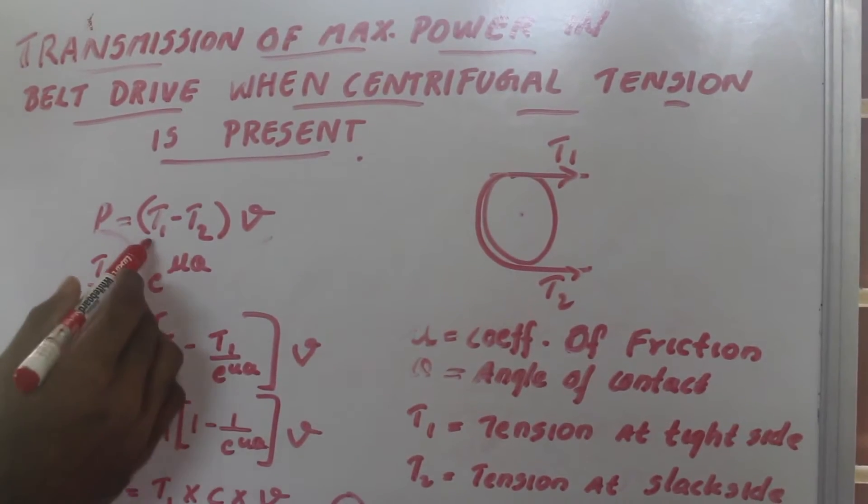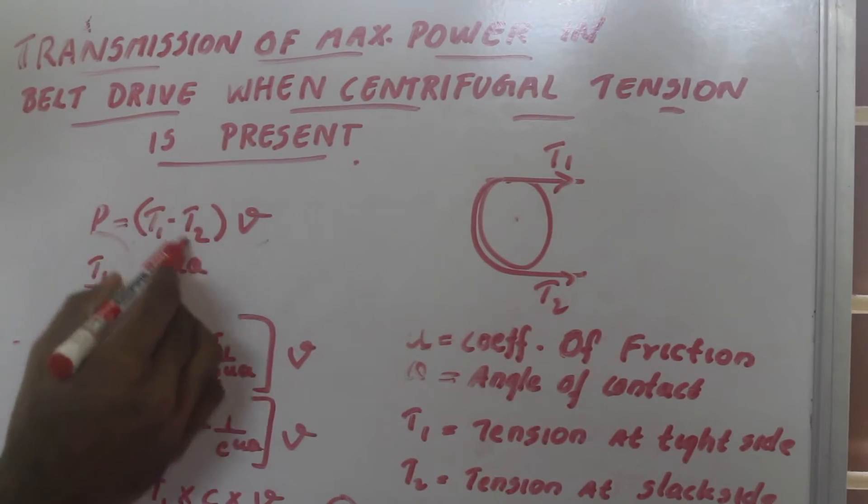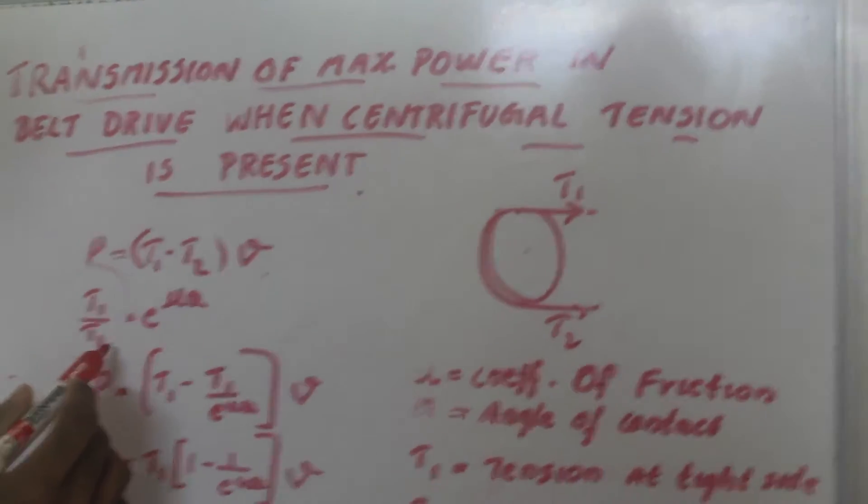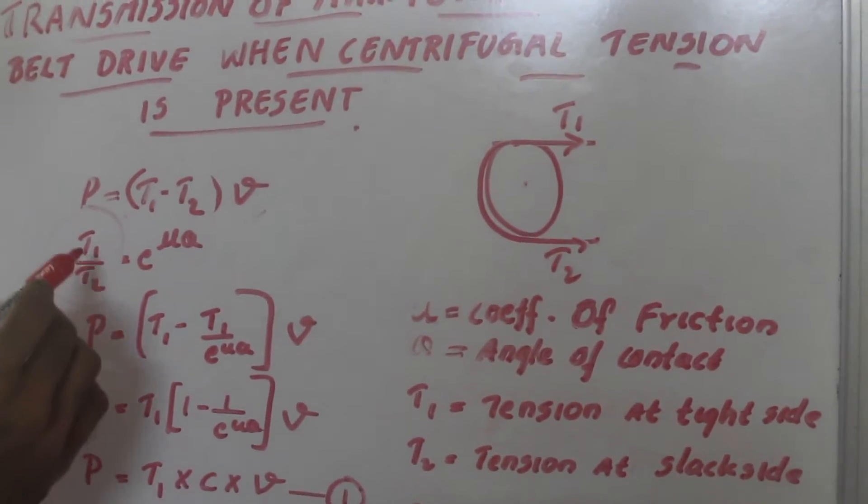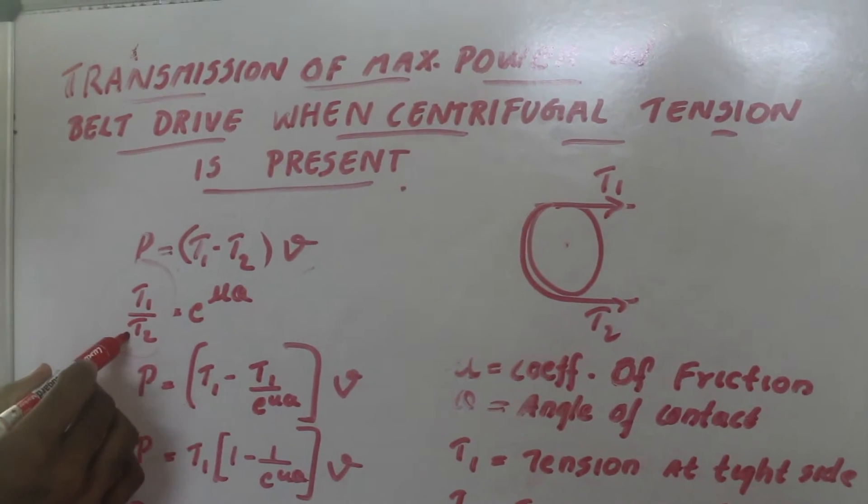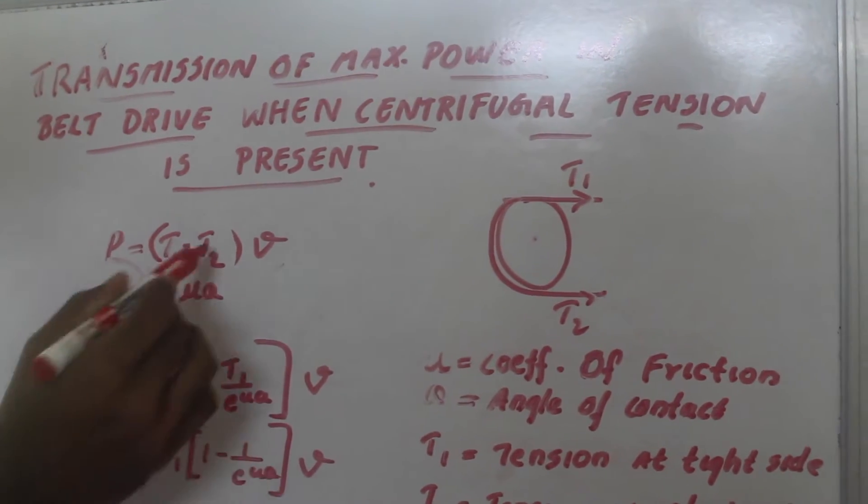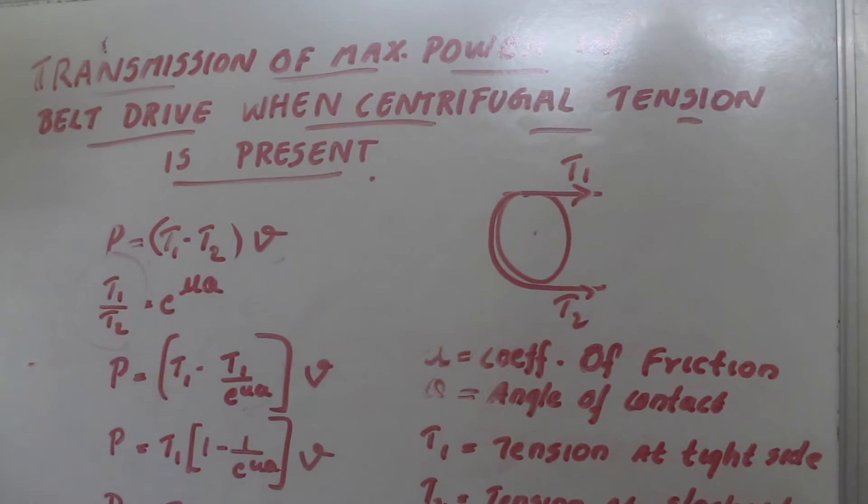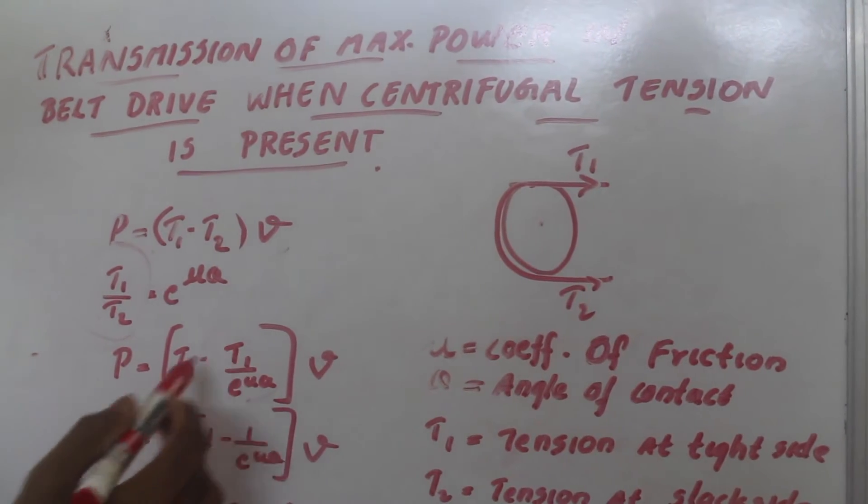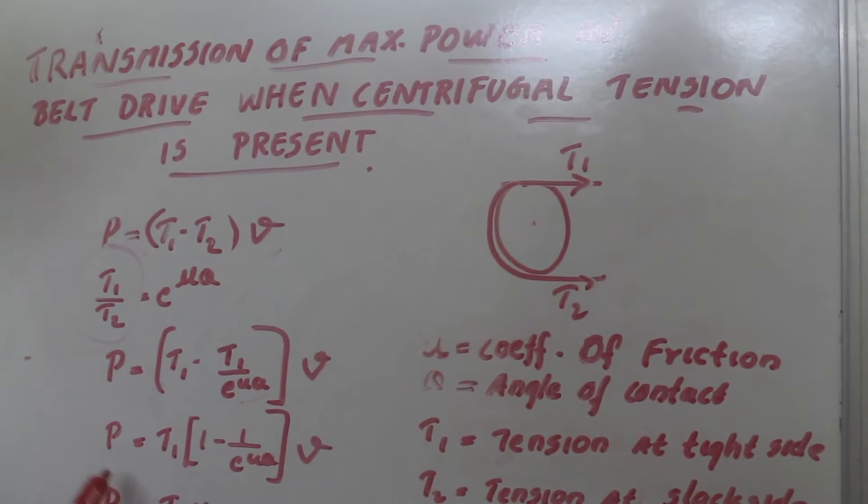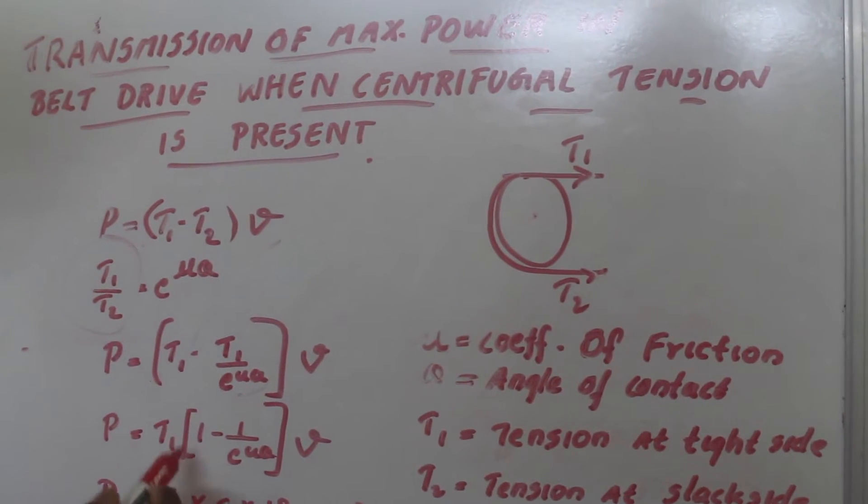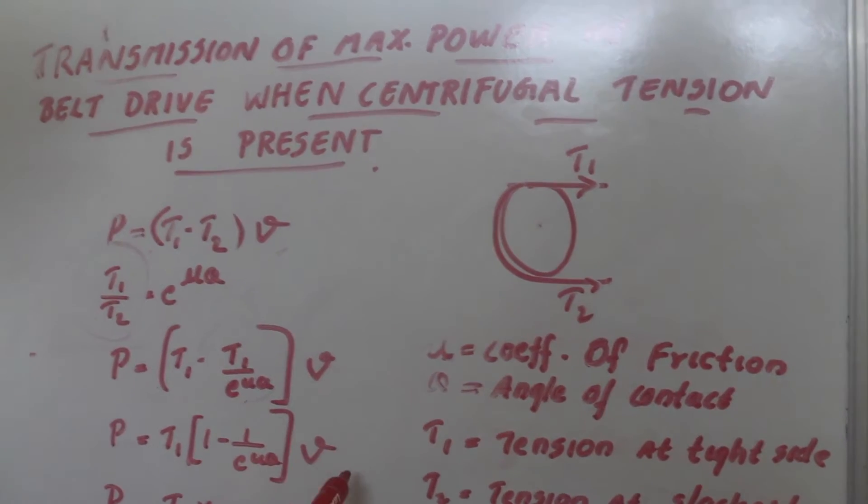Hence, power is equal to T1 minus T2 times v, where T2 we can substitute as T2 equals T1 divided by e raised to μθ. Then power is equal to T1 times (1 minus 1 by e raised to μθ) into v.